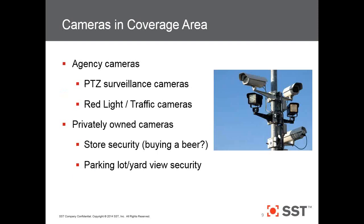Two types of cameras to be aware of: agency cameras, including pan-tilt-zoom surveillance cameras. ShotSpotter does not do cameras, but we do work with camera vendors to provide those camera systems with a lat and long so they can turn toward the alert when it's published. If the agency has somebody in an ops center who can pan-tilt-zoom the camera on their own, they can start looking for exit or escape routes as well.